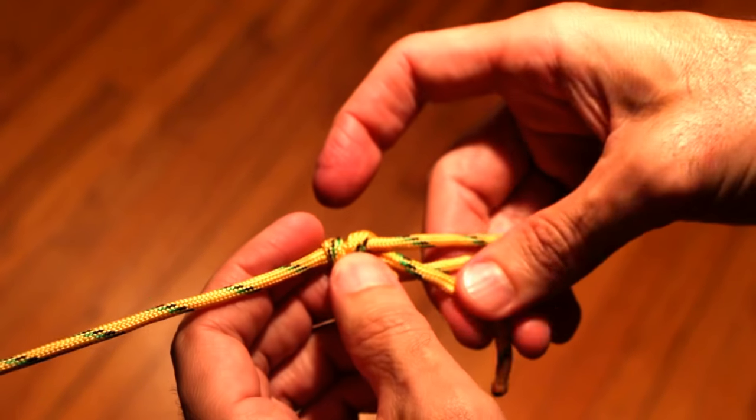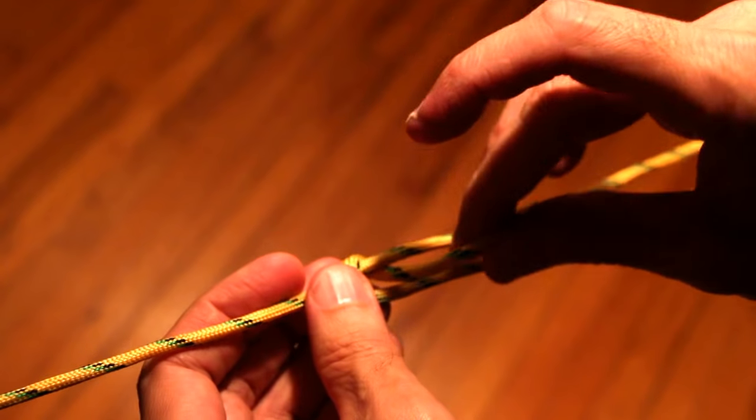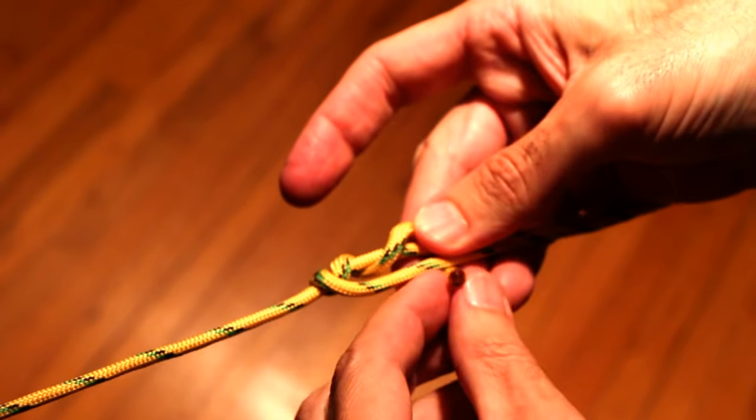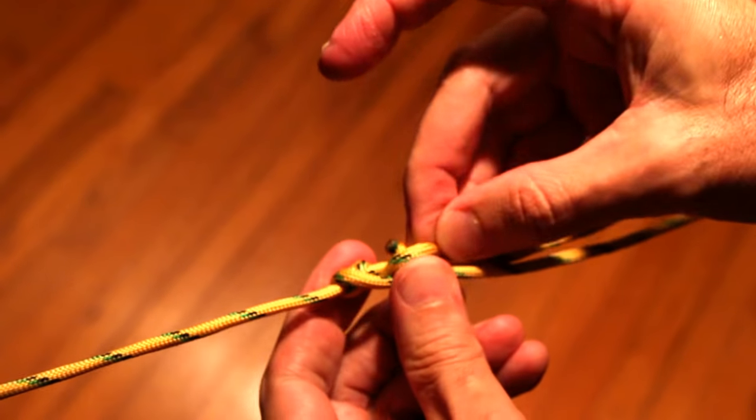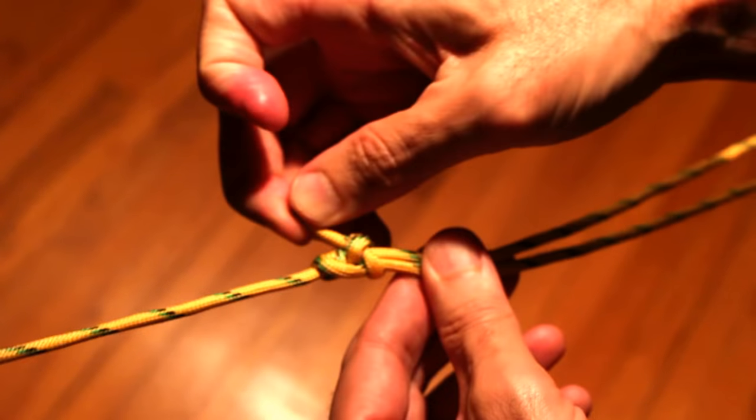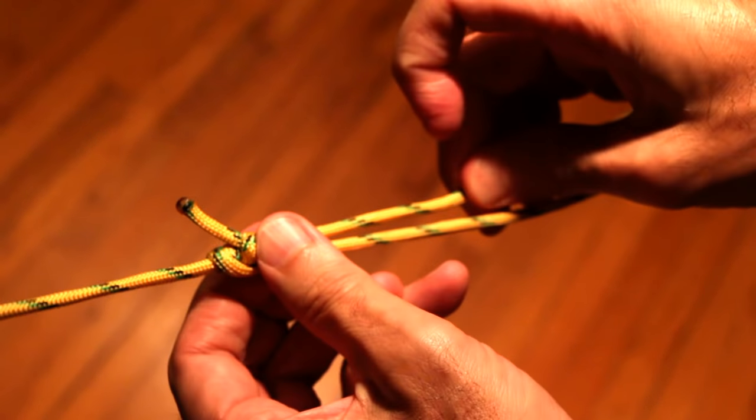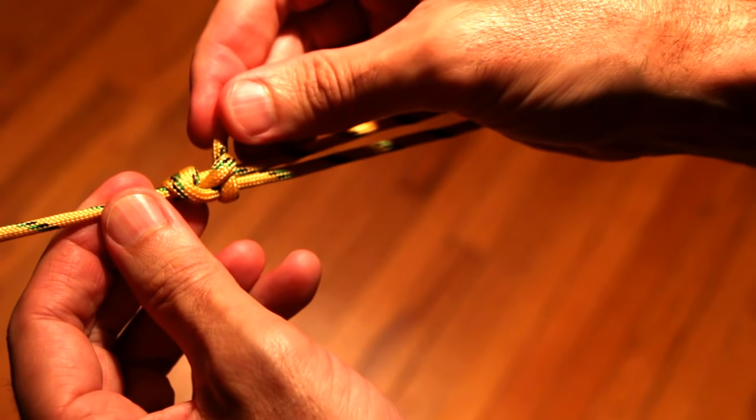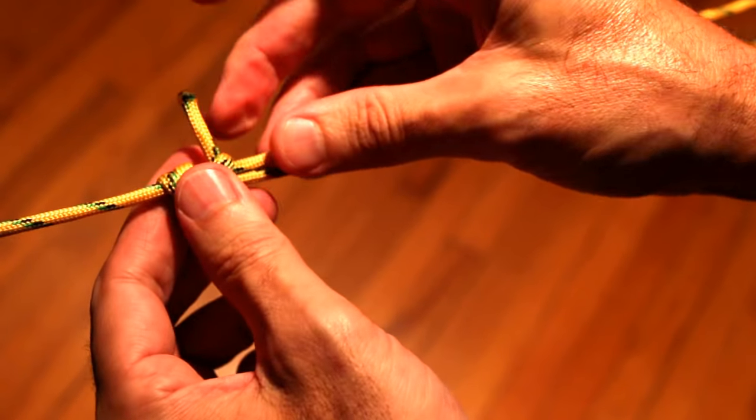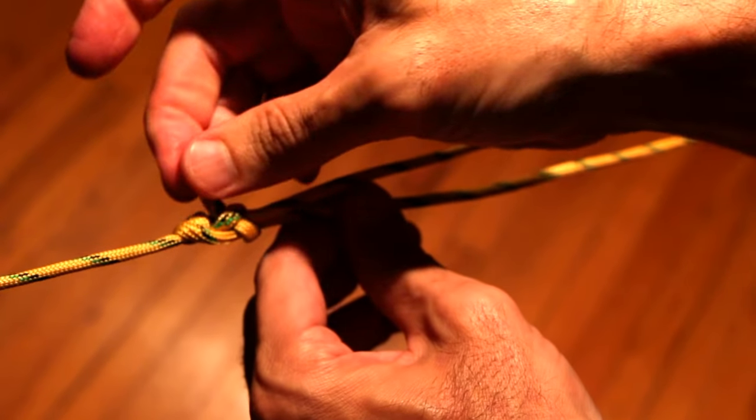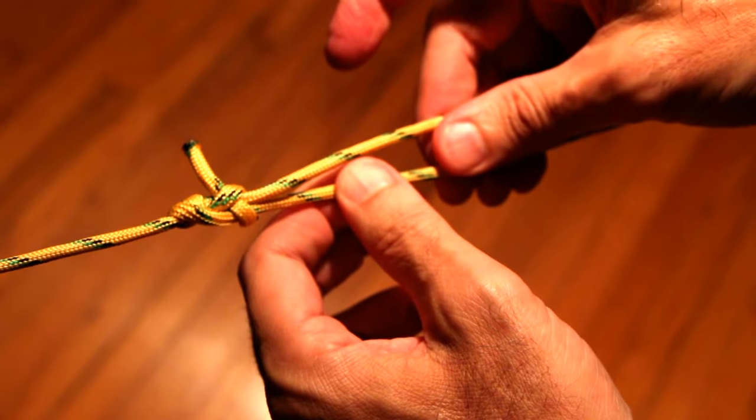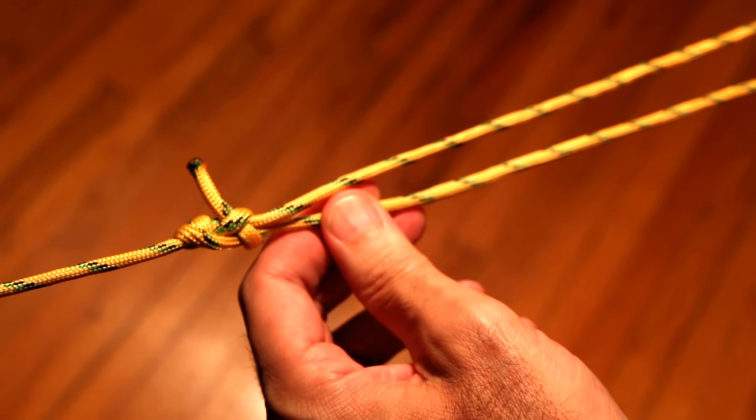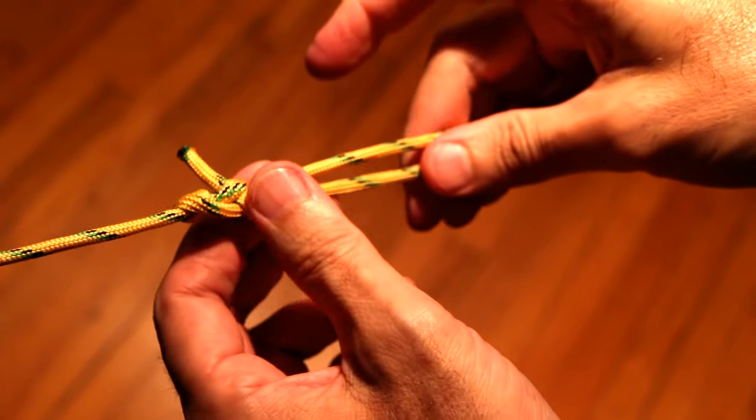And she tied something that went like this and then went around in the same direction, dove back through this loop. And that is a great little knot as well. Now it does leave a gap here when you put tension on it. It doesn't quite do what the arrowhead does but it's still a great improvement over the taut line.